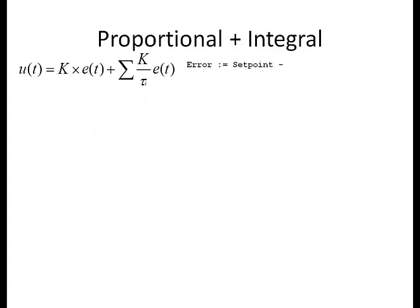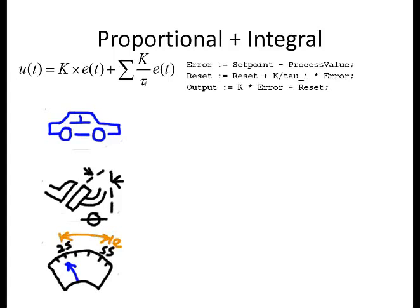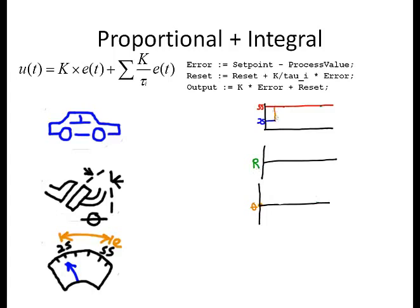Let's look at our car example again. We have the same car, the same theta, and the same speed, but this time we add a graph of the accumulated error in the reset register. We begin with the same error. This error, multiplied by the gain, gives the same proportional component value. This value is divided by tau_i and added to the reset register. This reset register is then added to the output along with the proportional component, causing the output to increase and speeding up the car.